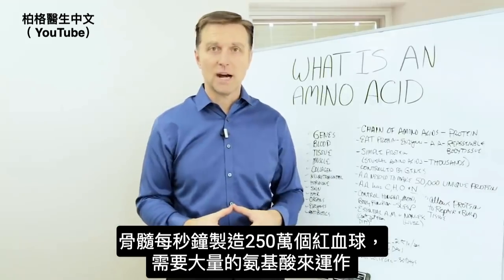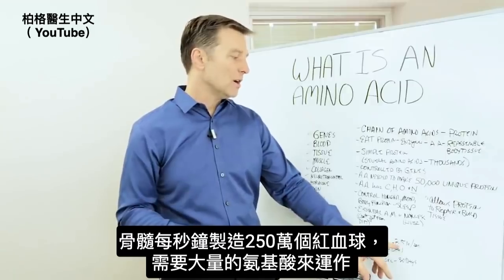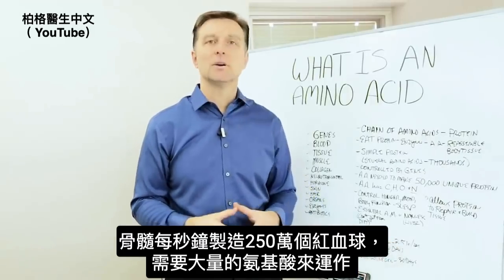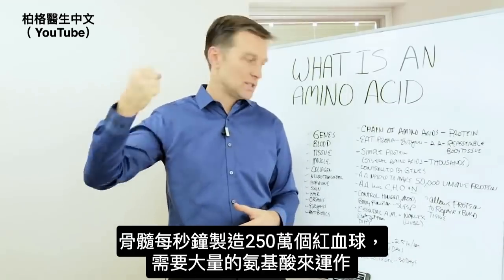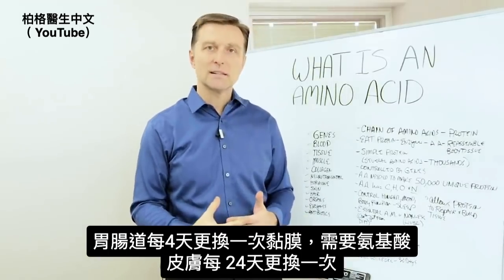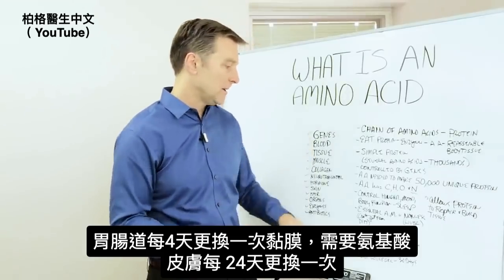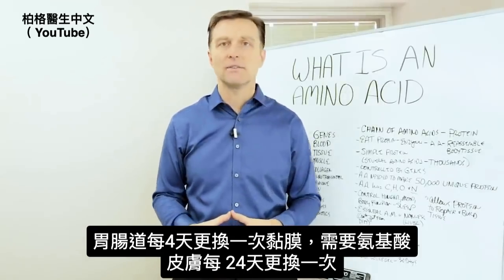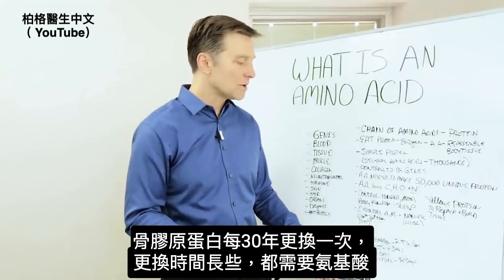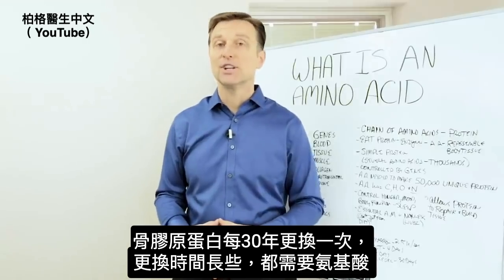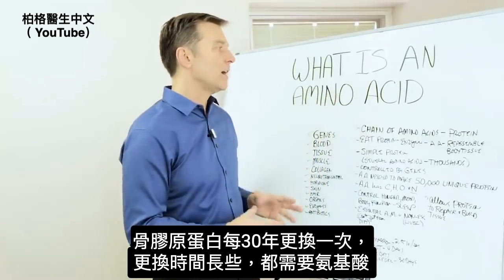The bone marrow in your body makes red blood cells — two and a half million red blood cells every single second — so it's requiring a lot of amino acids to do that. Your GI tract replaces the lining every four days, requiring amino acids. The skin replaces itself every 24 days, and bone collagen replaces itself every 30 years — but all of that requires amino acids.